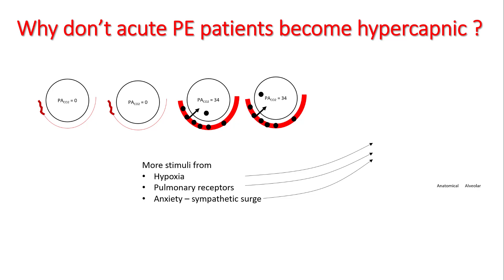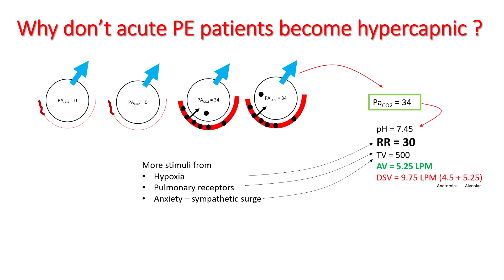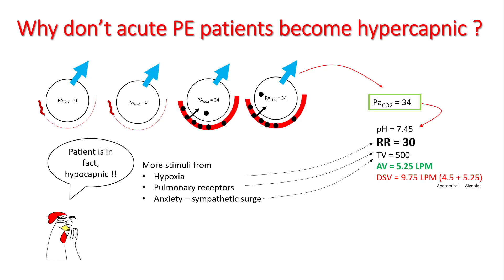However, this is not the end of the story. The patient is also hypoxic and anxious because of the sympathetic surge caused by lower blood pressure, and the pulmonary receptors in the capillaries and alveolar wall cause more stimulation for breathing. This results in an even higher respiratory rate — alveolar ventilation is now 5.25 and PaCO2 is now 34. In fact, patients with acute PE will be hypocapnic and have respiratory alkalosis.